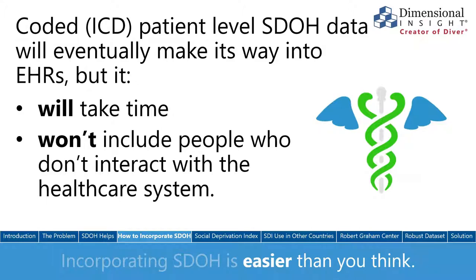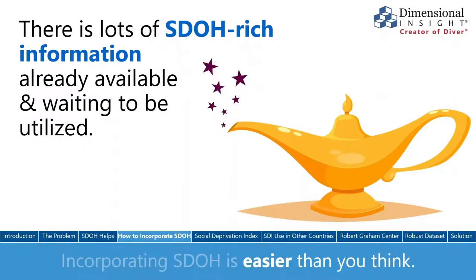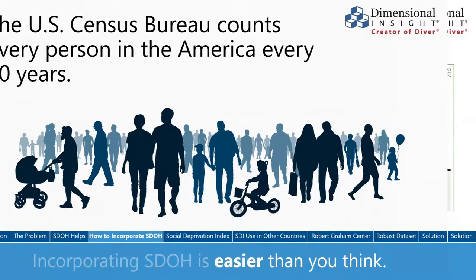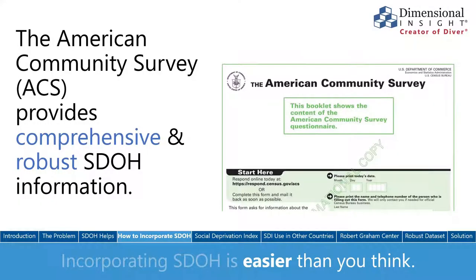There's literally a treasure trove of very useful information around social determinants, and it's available to anyone who wants it. The 2020 decennial census is now underway, and the Census Bureau is counting every person in the country. In addition to the decennial census, the Census Bureau also collects useful information such as the American Community Survey, or the ACS. This is designed to update the demographic and social factors of the population more often than the decennial census, and every location in the U.S. is updated at least once every five years.